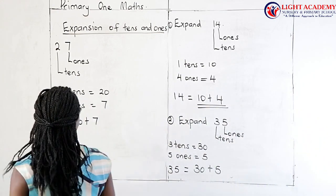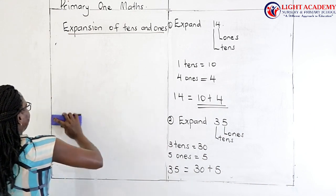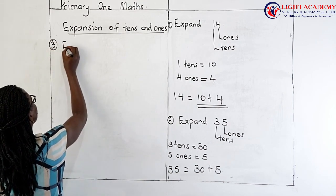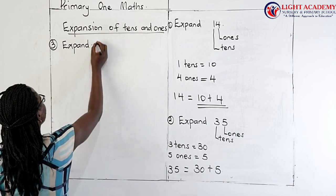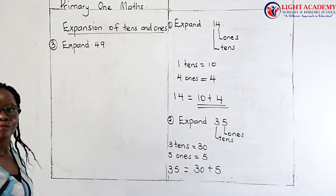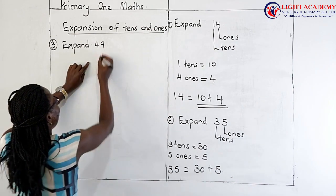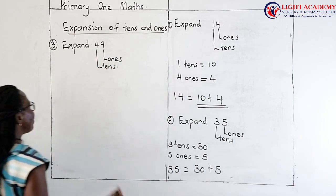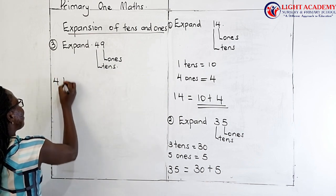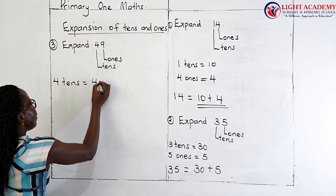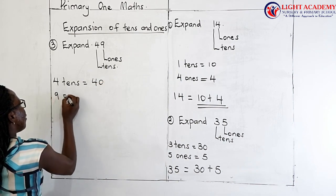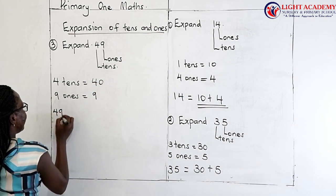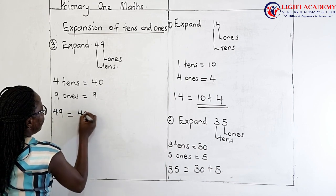That is what we mean by expansion — how did they derive 35, which numbers were made big in order to get it? Let us look at one more example, number 3: expand 49. Here, 9 is in the place value of ones, and 4 is in the place value of tens. So 4 tens gives us 40, and then 9 ones gives us 9. Therefore, 49 is expanded as 40 plus 9.